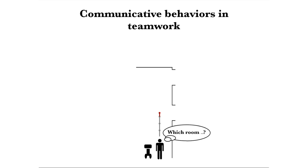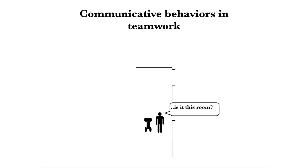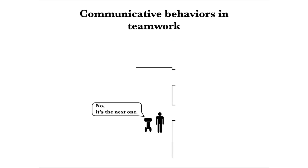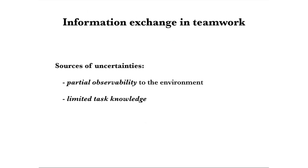Consider a robot and a human working together to reach a designated location to provide service. As they come close to the place, the human partner feels unsure about the exact number. She slows down, waits a bit, and asks the robot if they have reached the target location. The robot then responds. In teamwork, teammates need to constantly exchange information to deal with uncertainties.